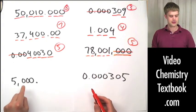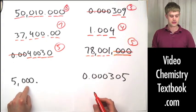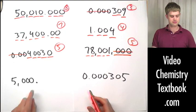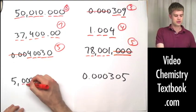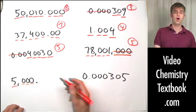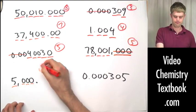5,000. with a decimal point — zeros to the right, and there is a decimal point, which means they're all significant. Four total significant figures.